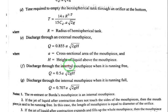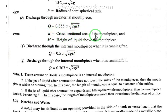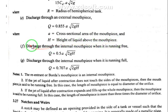Discharge through an external mouthpiece: Q equals 0.855 times a times square root of 2gH, where a is the cross-sectional area of the mouthpiece and H is the height of the liquid above the mouthpiece.